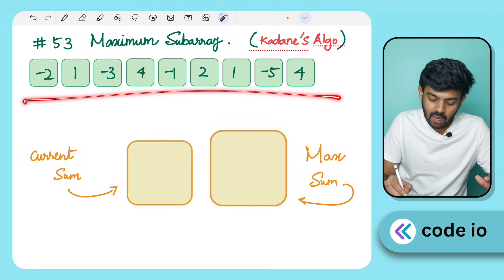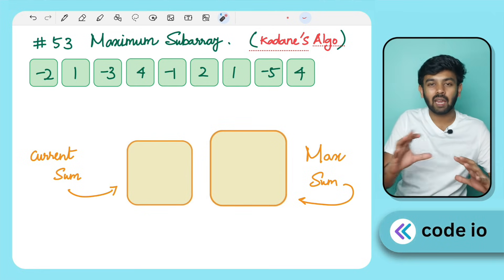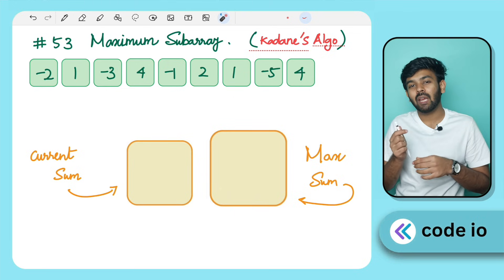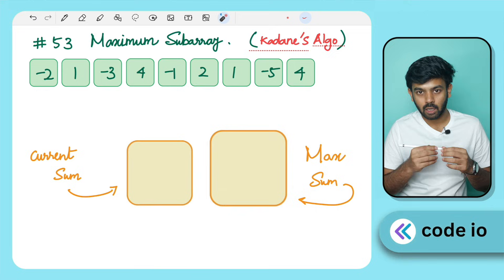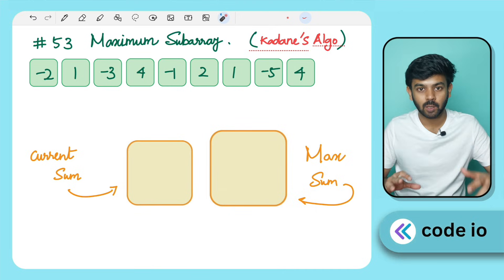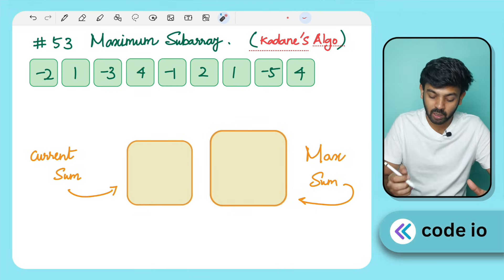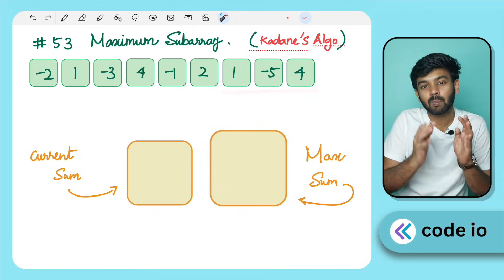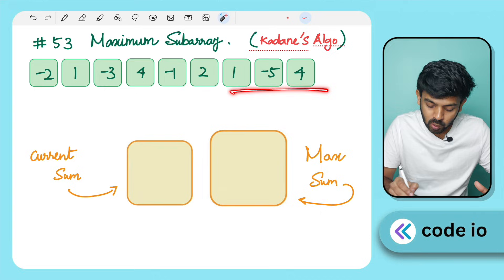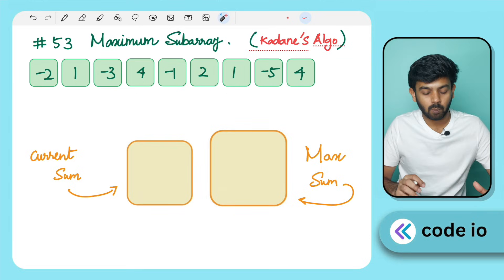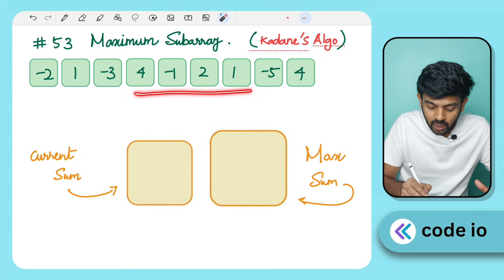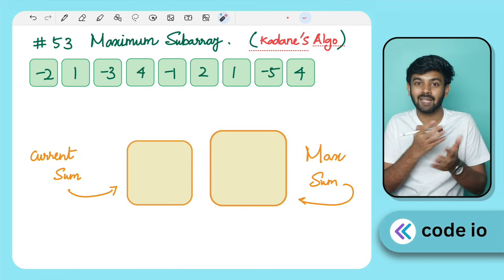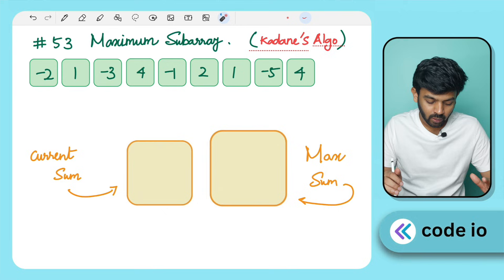We have an array with several elements. A sub array is an individual element or a continuous segment of an array. For example, minus 1, 5, 4 is a sub array, and 4, minus 1, 2, 1 is a sub array. It must be a continuous segment of the array.